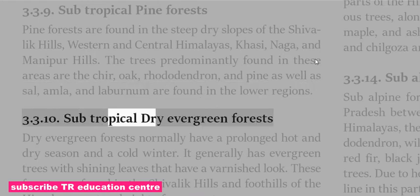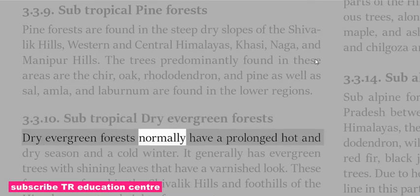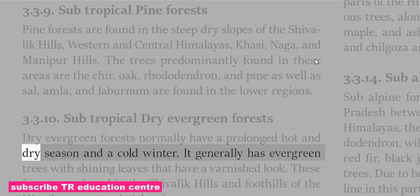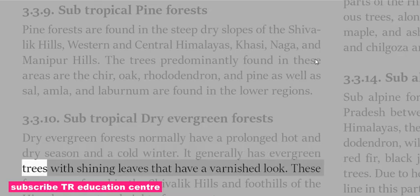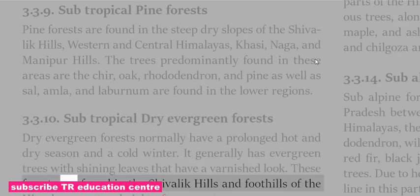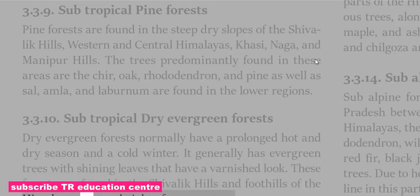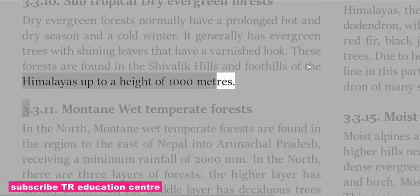Subtropical Pine Forests are found in the steep dry slopes of the Shivalik Hills, western and central Himalayas, Naga and Manipur hills. The trees predominantly found in these areas are Chir oak, rhododendron and pine, while sal, amla and labanum are found in the lower regions.